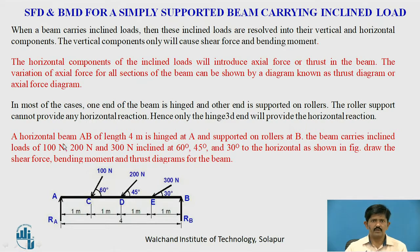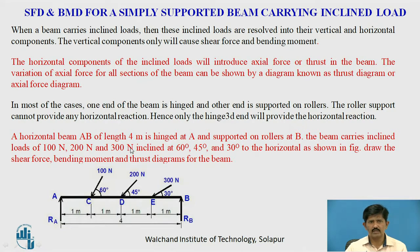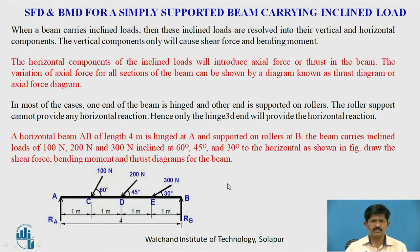Consider an example: a horizontal beam AB of length 4 meters is hinged at A and supported on rollers at B. The beam carries inclined loads of 100 N, 200 N, and 300 N, inclined at 60 degrees, 45 degrees, and 30 degrees to the horizontal respectively as shown in the figure. We have to draw the shear force and bending moment diagram for this beam.